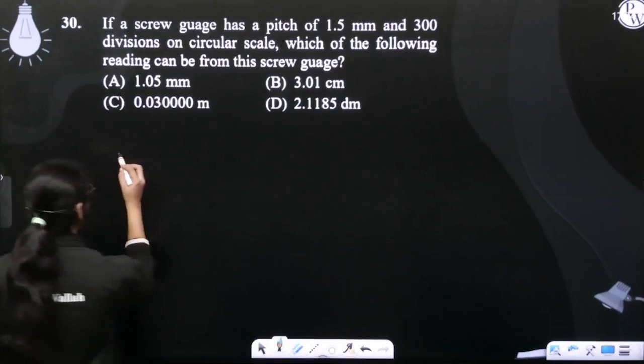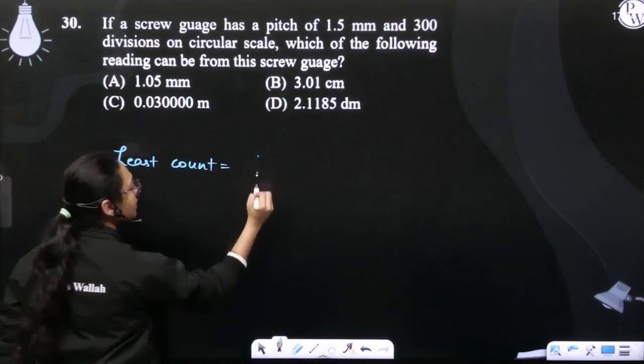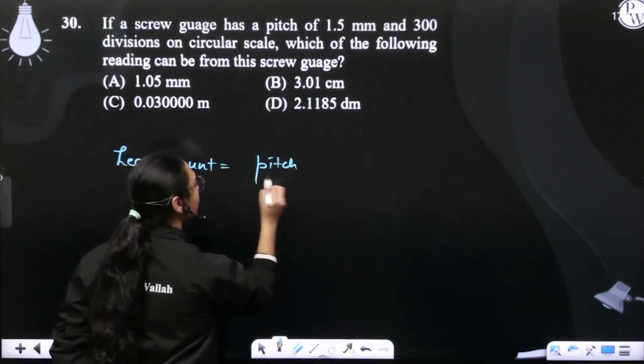Okay, first of all, let's find the least count. Least count is what we have? Pitch upon number of divisions.